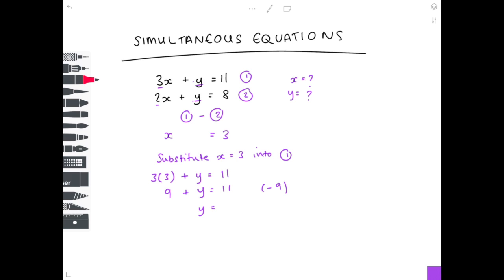11 take away 9 is 2. With these equations, it's worth rewriting out your final answer to make the examiner's life as easy as possible. They're more likely to give you the marks if you lay out your work properly. So we have x equals 3 and y equals 2.